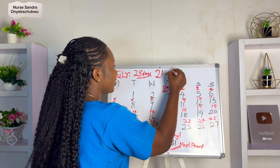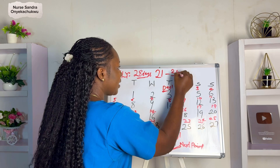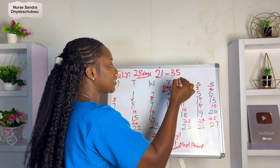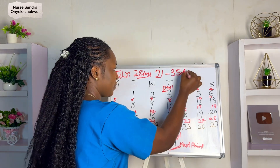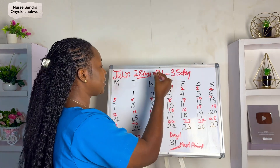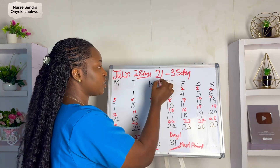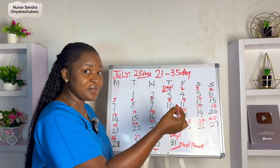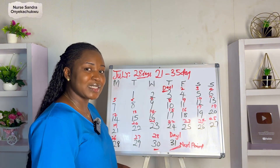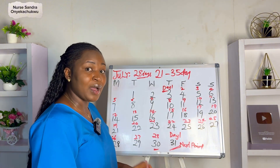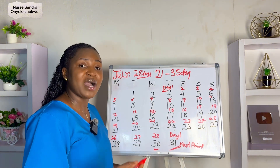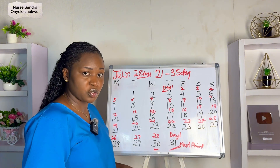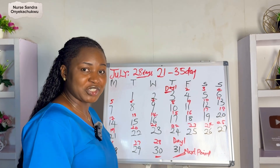If your cycle falls between 21 to 35 days, it is considered normal. It's only when it's less than 21 or greater than 35 days that it's considered abnormal, and that means you need to see your doctor.